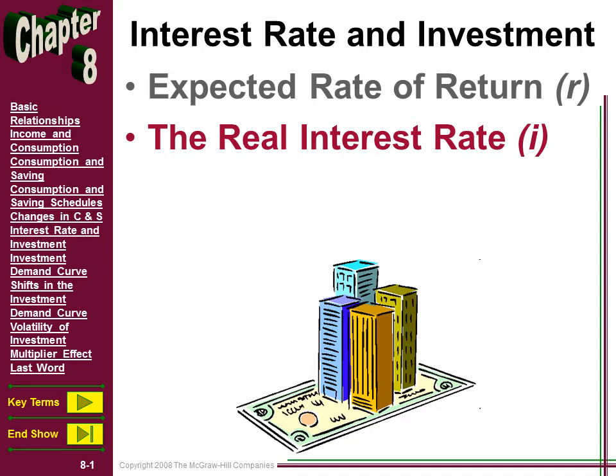In our simple example, what if Nike Corporation, after all their tests and their modeling, expected a real rate of return of getting into athletic apparel of 8% over 10 years on this new project? Well, if their expected rate of return is 8% and the real rate of interest in the economy is, say, 5%, then obviously it should make sense for Nike Corporation to go ahead and start that new project.